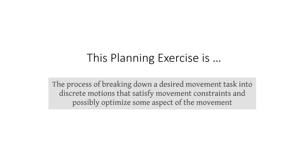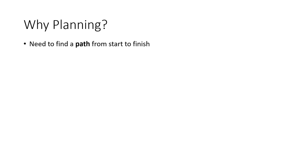We identified that this planning exercise is actually the process of breaking down the desired movement into a discrete set of motions. In that quest we will make sure that we satisfy movement constraints and we possibly try to optimize time, energy, or some other aspects of the movement. We need to find a path from start to finish — asking your end effector to start from somewhere and reach the finish point or end point, and the path needs to be identified.